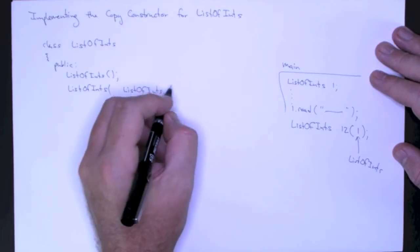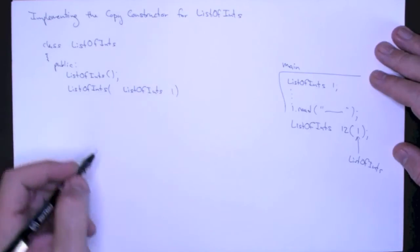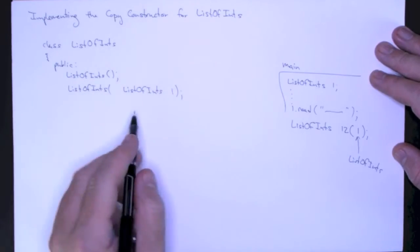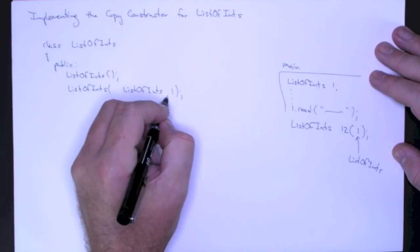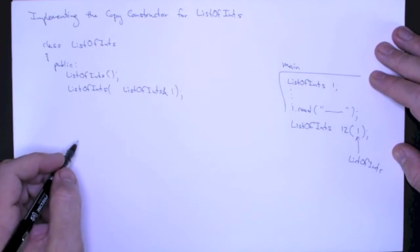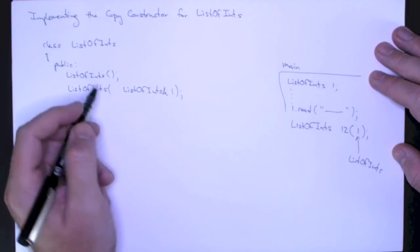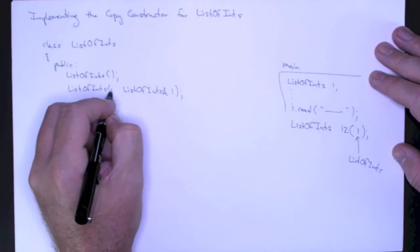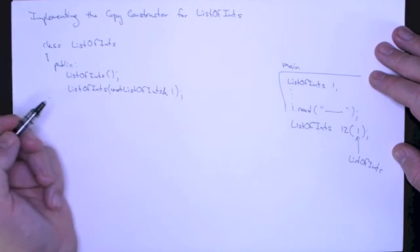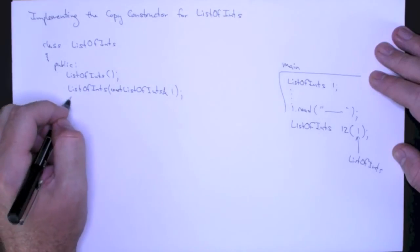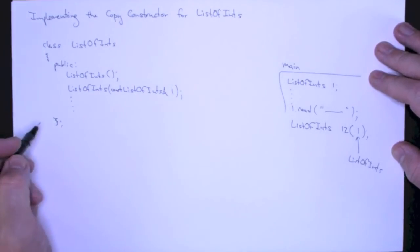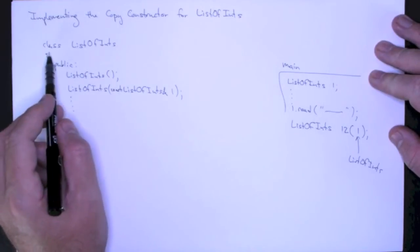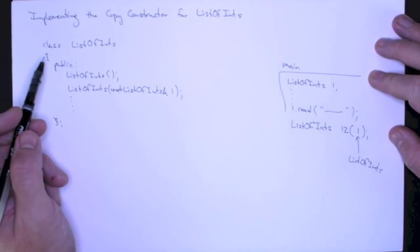And as the parameter, I'm just going to call it l again. This list of ints could be quite large, so we're going to pass it in by reference. And since we don't want it to change in the method, we're going to declare it as constant. So this is the definition that you would add to the class constructor for list of ints.